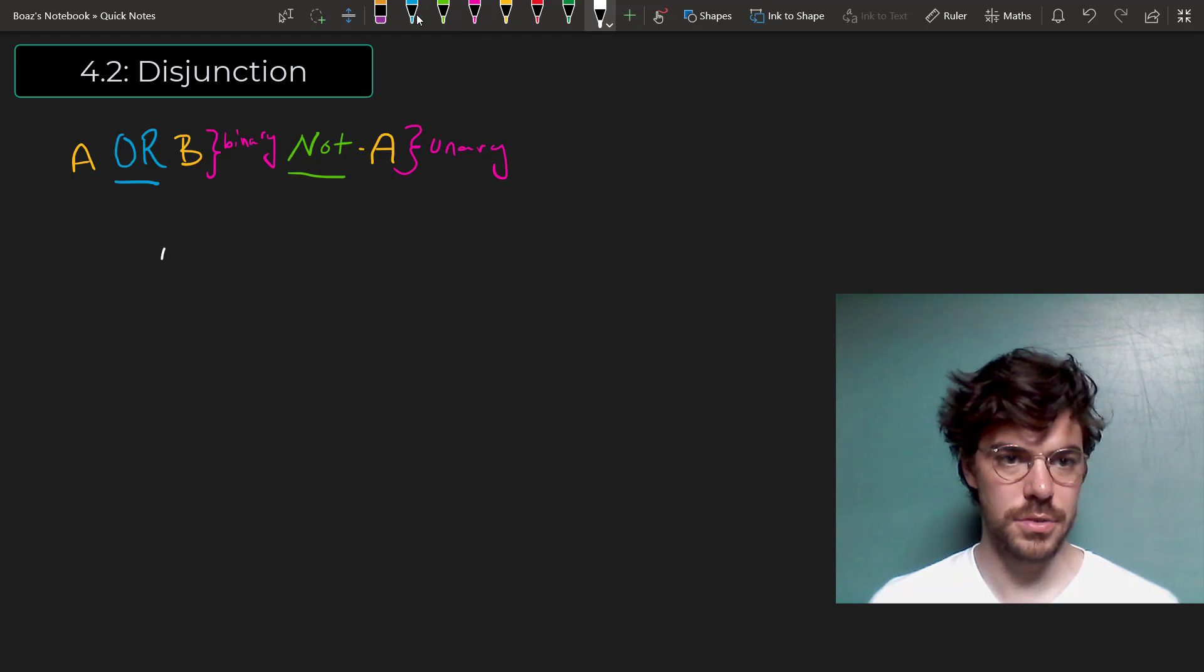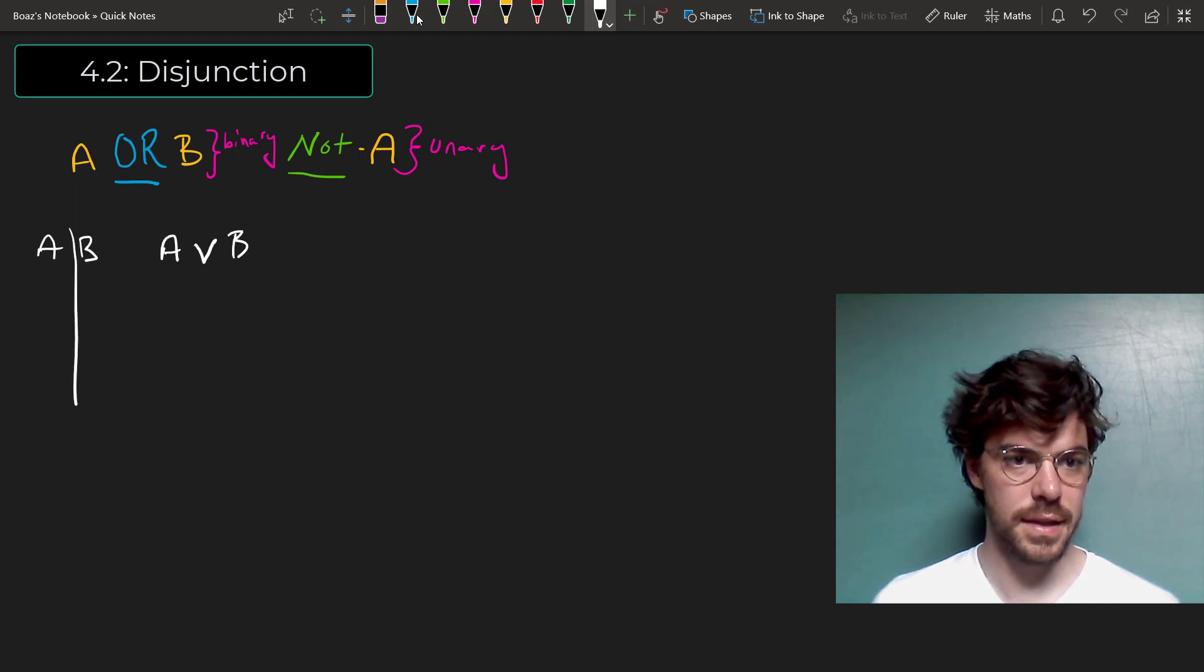Now we write this as follows. A, OR. OR is represented by this wedge, B. Here are the truth conditions for this. First we have to write out all the possible combinations of A and B.